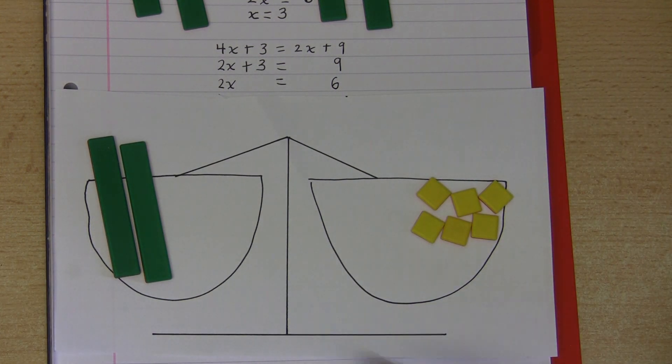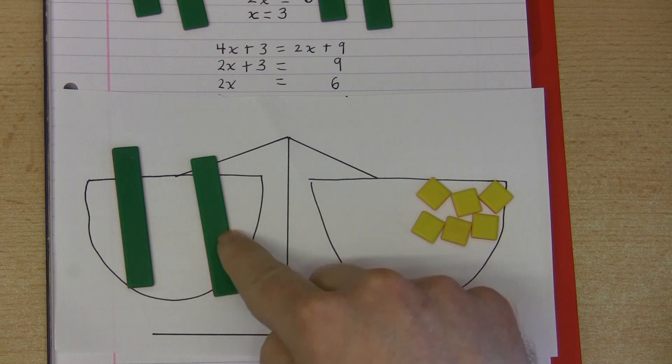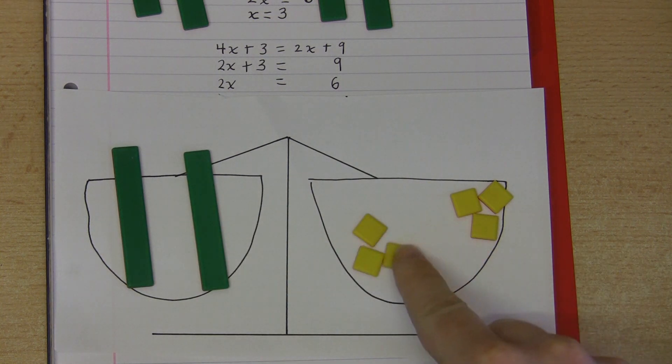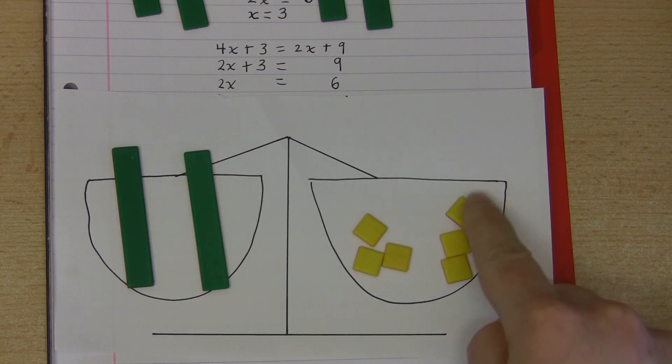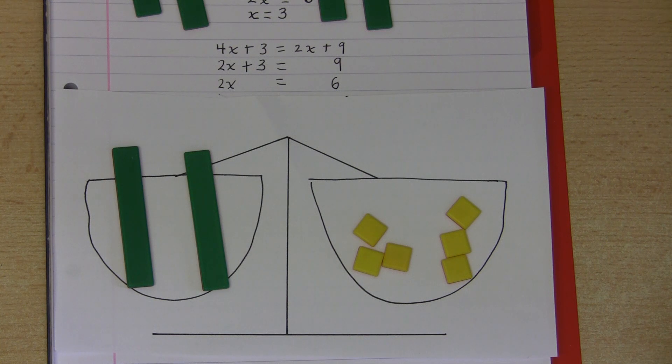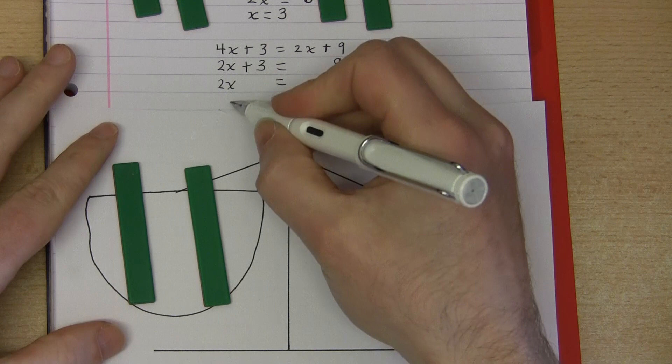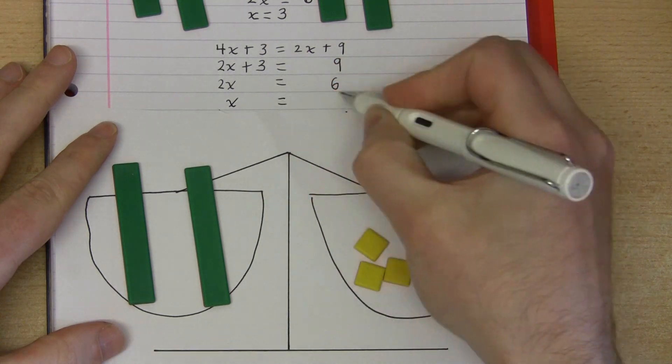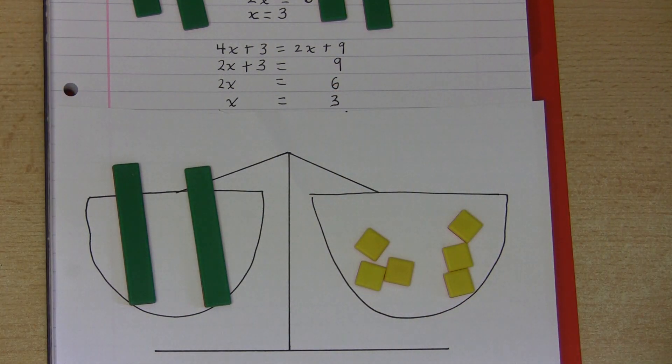And then by doing some manipulation, some rearrangements such as this, then hopefully we can see that a green bar, therefore the x variable, is equal to three units. And so the solution to this equation is x is equal to three as before. So hopefully a method like this will lead to greater conceptual understanding and less reliance on tricks which are easily forgotten.